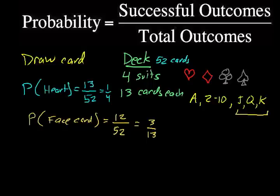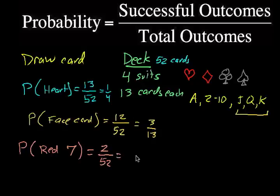And let's try another one. What is the probability of drawing a red 7? Probability of drawing a red 7. Well, again, there are 13 cards in each suit. Two of the suits are red. So you could say there's a 7 of hearts and a 7 of diamonds. So there are really only 2 successful outcomes out of the 52 cards in the deck, which reduces to 1, and then half of 52 is 26. So you have a 1 twenty-sixth chance of drawing a red 7.